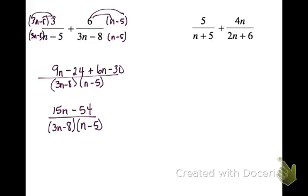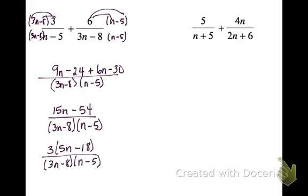Now I need to see if I can simplify anything further. On the top, I can factor 15n minus 54 by pulling out a common factor of 3, giving 3 times 5n minus 18. I don't see any common factors that cancel out, so this is just my final answer.